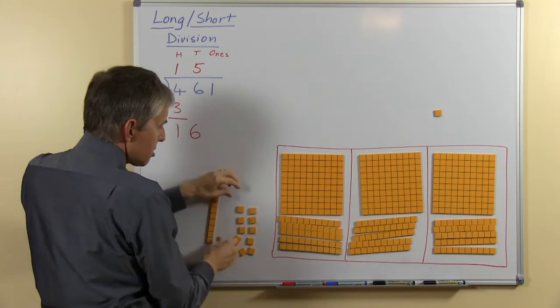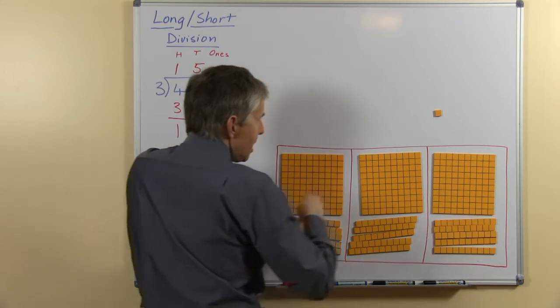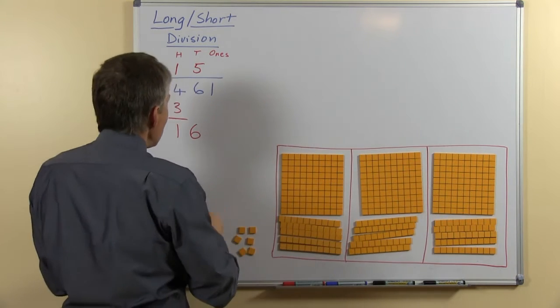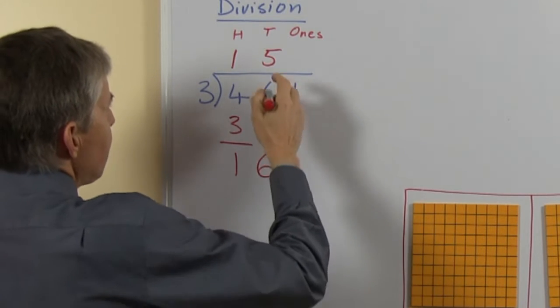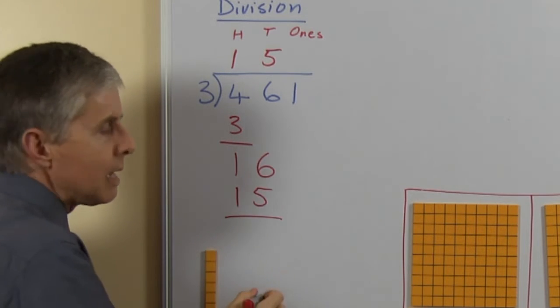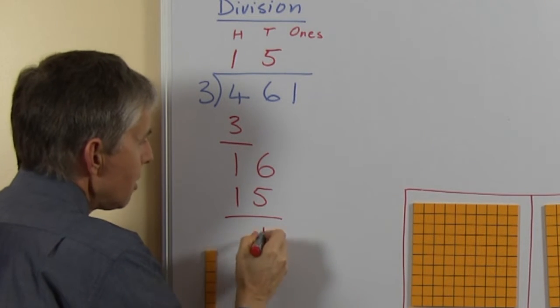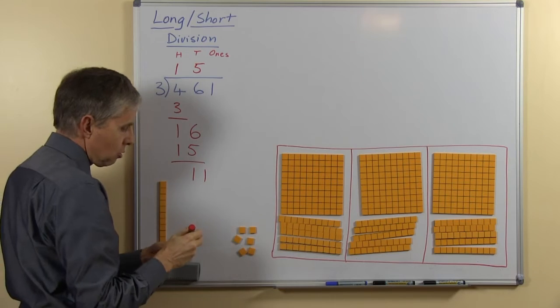Here I've got 10 ones, these 10 plus this one makes 11 ones, I should write that down, so I'm missing out a step here. 5 threes are 15, these are the tens that we shared out, we take that away, there will be 1 left, this 1 ten we write the 1 one next to it to show 11 ones.